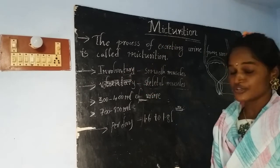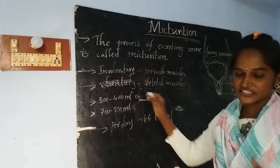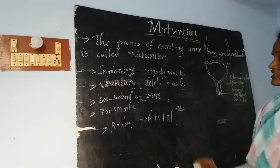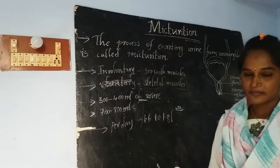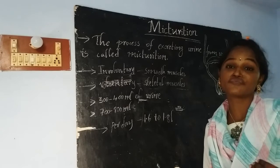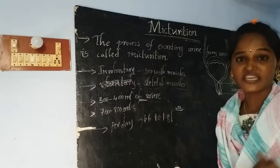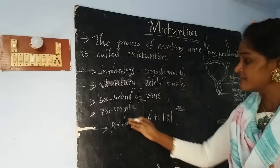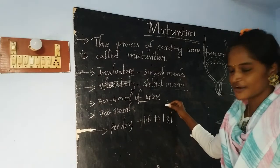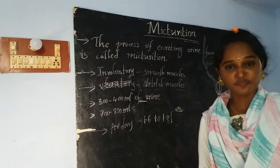Whenever our urinary bladder is filled with 300 to 400 ml of urine, the brain sends a signal indicating an urge for urination. At that time, the internal urethral sphincter — being involuntary — just relaxes and opens. Though the urinary bladder has a capacity of about 700 to 800 ml, waiting until 700 to 800 ml makes the urination process painful.